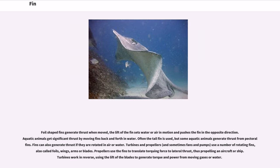Foil-shaped fins generate thrust when moved; the lift of the fin sets water or air in motion and pushes the fin in the opposite direction. Aquatic animals get significant thrust by moving fins back and forth in water. Often the tail fin is used, but some aquatic animals generate thrust from pectoral fins.